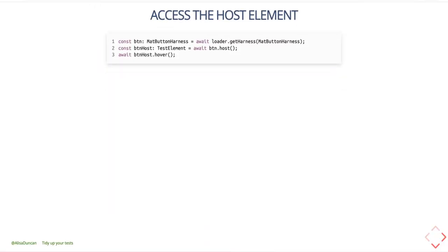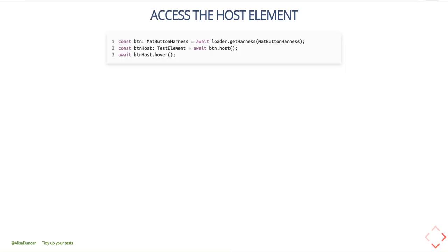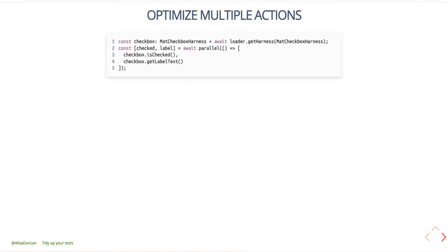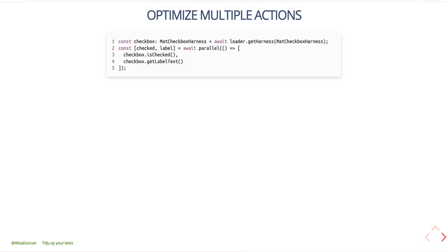For all component harnesses, you can access the host element — this is similar to getting the native element from a debug element. Once you have the host element, which is of type TestElement, you can hover, blur, get computed properties, get the class list, and things like that. You can also optimize for multiple actions by using the helper method parallel. What parallel does is batch up multiple async operations and optimize for change detection — so in one go, I'm able to get both whether a checkbox is checked and the label for the checkbox.